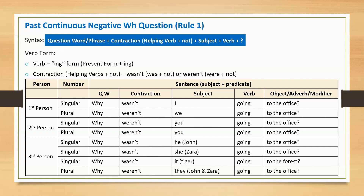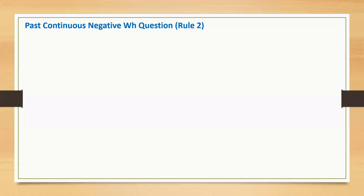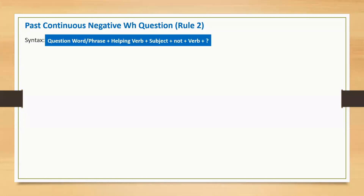I will explain another way of making past continuous negative WH question. Rule 2: the sentence begins with a question word or phrase, followed by helping verb, subject, the word 'not', main verb, and question mark. Main verb is in the -ing form. Helping verb 'was' is for singular and 'were' is for plural.